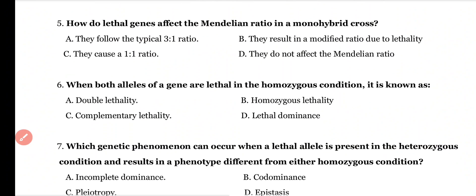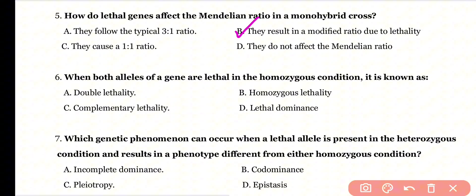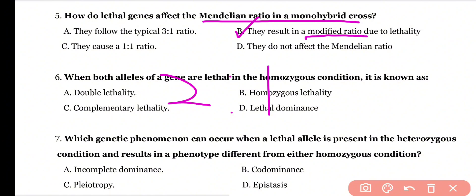Question 5: How do lethal genes affect the Mendelian ratio in a monohybrid cross? They follow the typical 3:1 ratio; they result in a modified ratio due to lethality; they cause a 1:1 ratio; or they do not affect the Mendelian ratio? Correct answer is option B. In a monohybrid cross, the Mendelian ratio is modified due to lethal genes, becoming a 2:1 ratio.